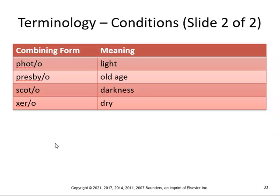Photo means light — photophobia is the condition of sensitivity to light. Presby means old age — you've heard of the Presbyterian church — so presbyopia would be the condition of defective vision with advancing age. Scoto means darkness — scotoma is an area of depressed vision surrounded by an area of normal vision, a blind spot. And xero means dry — xerophthalmia is the condition of dry eyes.